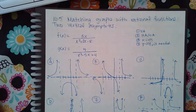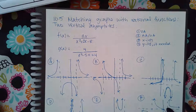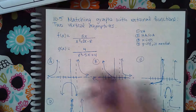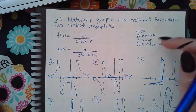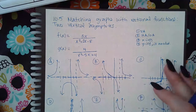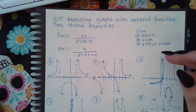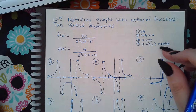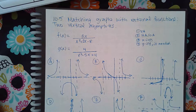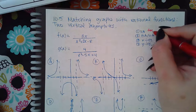Here we have 10.5: matching graphs with rational functions to vertical asymptotes. First, identify your vertical asymptotes and then you can rule out some of the graphs. Then determine your horizontal or oblique asymptotes and rule out some more. Then determine the x-intercepts to see if you can pin it down, and if that doesn't work, use the y-intercept. To find vertical asymptotes, set the denominator equal to zero.